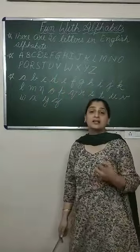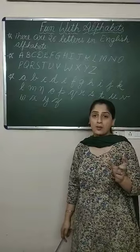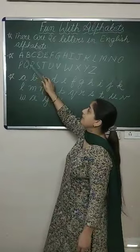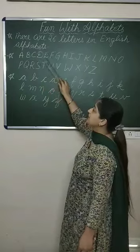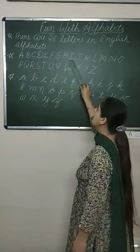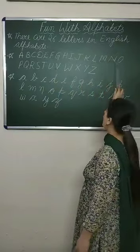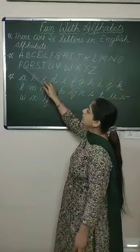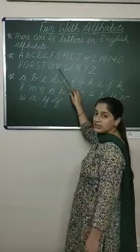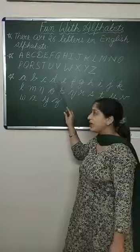How do we write them? There are capital letters and small letters. Capital letters are written as: A, B, C, D, E, F, G, H, I, J, K, L, M, N, O, P, Q, R, S, T, U, V, W, X, Y, Z.